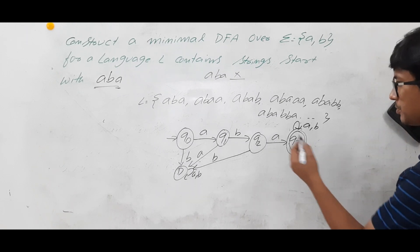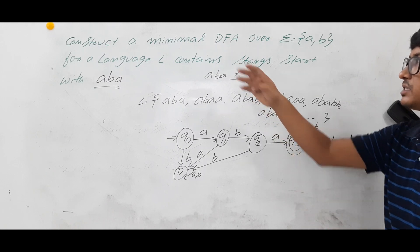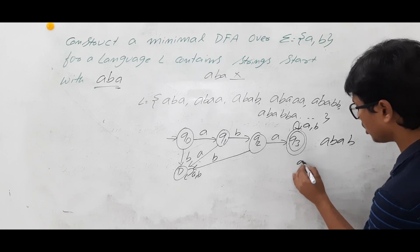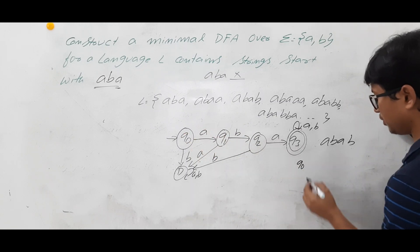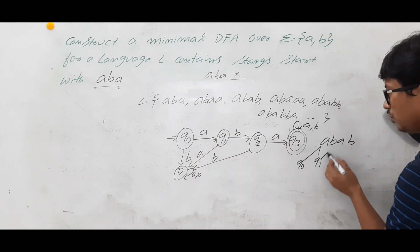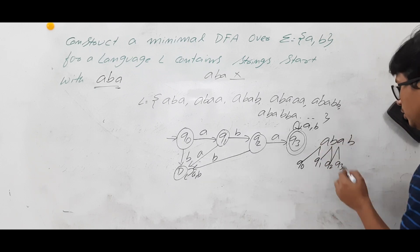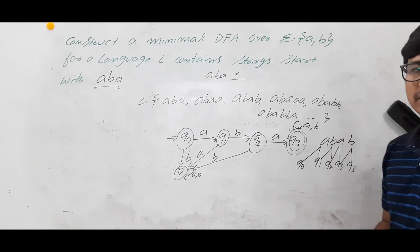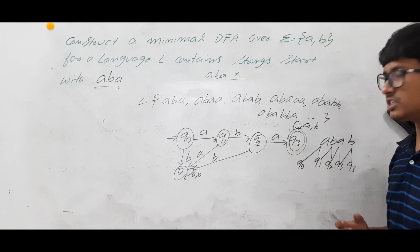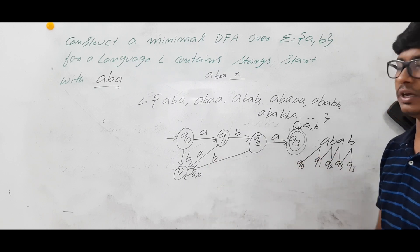Let's verify with the string ABAB, which belongs to language L since it starts with ABA. Starting from Q0: Q0 on A goes to Q1; Q1 on B goes to Q2; Q2 on A goes to Q3; Q3 on B goes to Q3. We reach Q3, which is a final state (double circle), so ABAB is accepted by the DFA. The DFA is accepting strings which belong to language L.